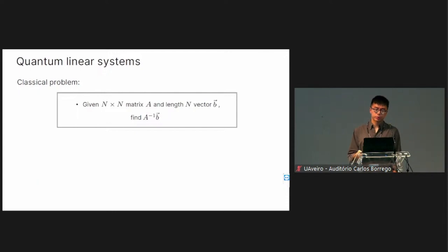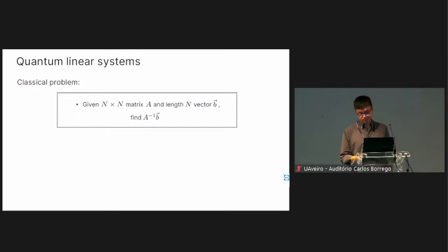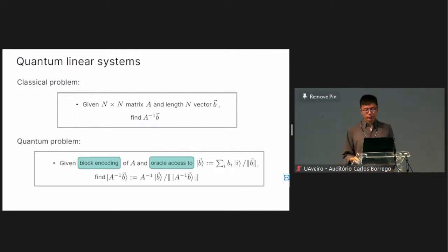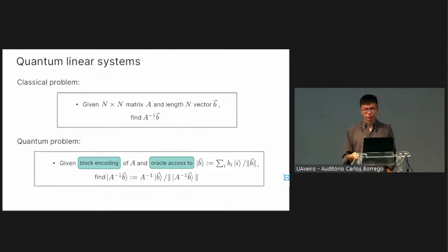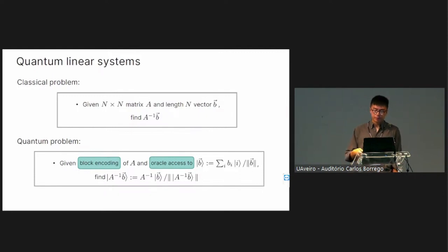To see concretely how this looks, consider the linear systems problem. Classically we have some matrix A and vector B and want to compute A-inverse times B. A modern quantum approach to the quantum linear systems problem is: given a block encoding of A and oracle access to quantum state |B⟩, find the quantum state |A-inverse B⟩. Already visually these are two quite different problems.